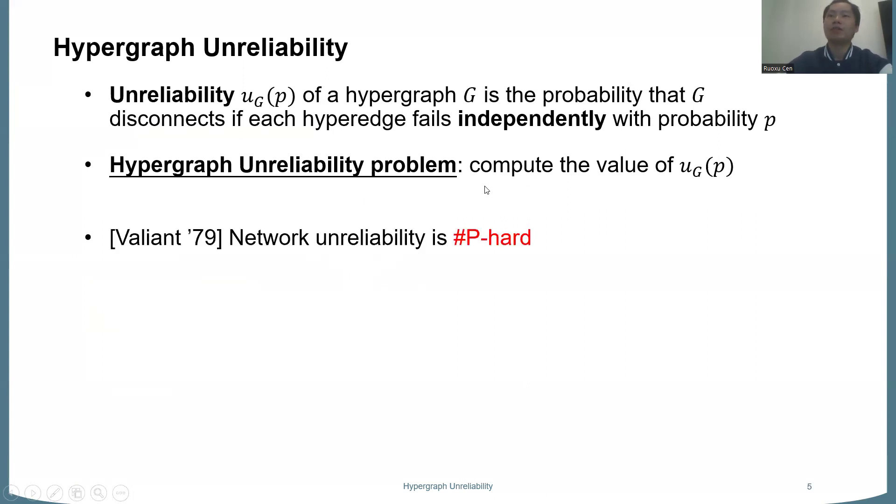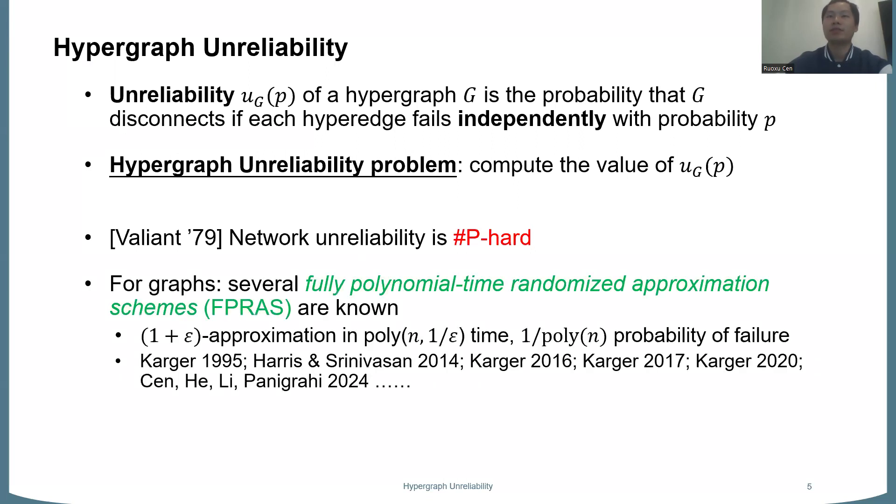Okay, so what do we know about this problem? Well, it is classically known as a sharp-P hard problem, even on graphs. Recall that sharp-P is a complexity class of counting the number of feasible solutions. So this means it's unlikely to get a polynomial time algorithm for the exact value of u_G(p). So the goal is actually to get some good approximation of u_G(p). And in graphs, this problem is actually well studied. So several fully polynomial time randomized approximation schemes are known for graphs, which means they will output a one-plus-epsilon approximation in polynomial time, polynomial dependency on n and one-over-epsilon. And also it will succeed with high probability. Okay, so there's a very long line of such results.